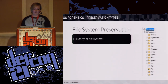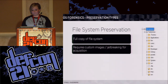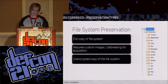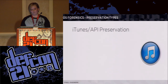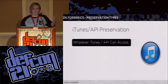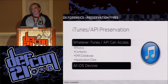File system preservation — we're actually able to get a full copy of the file system, though you're not going to get unallocated space. This is kind of what the file system would look like in EnCase, for example. It also requires jailbreaking for acquisition. It's an unencrypted copy of the file system because it's more logical than physical. If we're forced to or unable to get a logical or physical acquisition, we will do basically an iPhone backup using iTunes and get whatever iTunes can collect — photos, contacts, SMS, and app data — and that's available on all iOS devices.